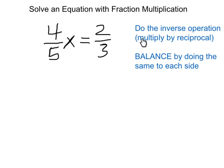I need to do the inverse to the term next to the x in order to get x by itself, and of course as always with algebra, I need to balance by doing the same thing to each side of the equation.